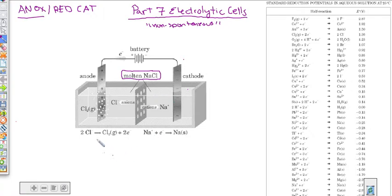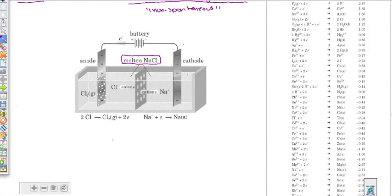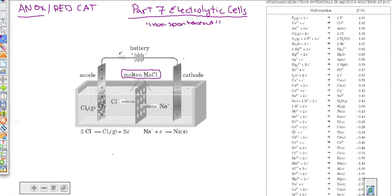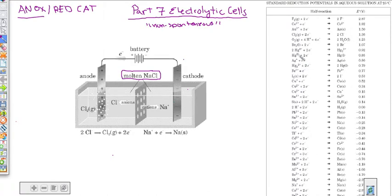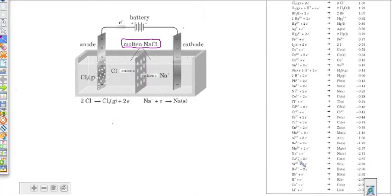And so just to prove that this is definitely non-spontaneous, let's look up at our reduction potentials real quick. And we find that sodium. Let's find sodium on here. Where is it? There it is. Sodium right here is a negative 2.71 for voltage.